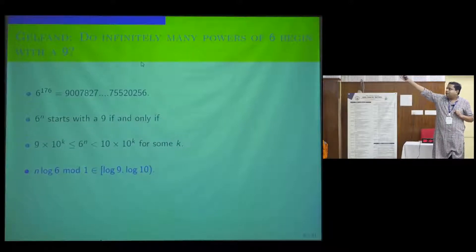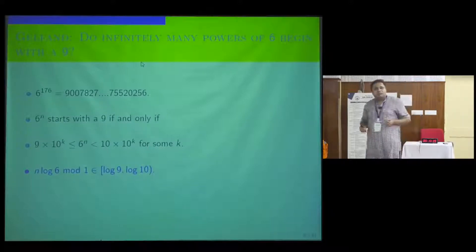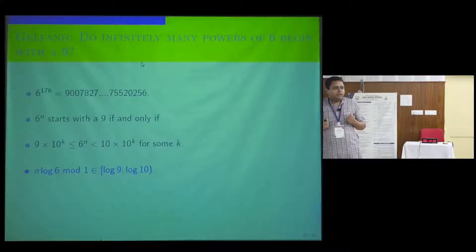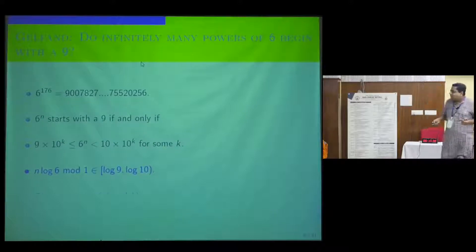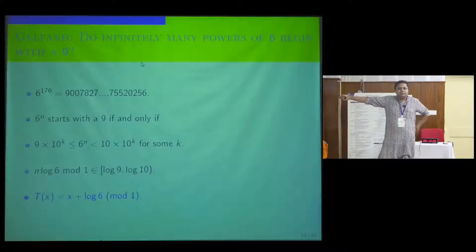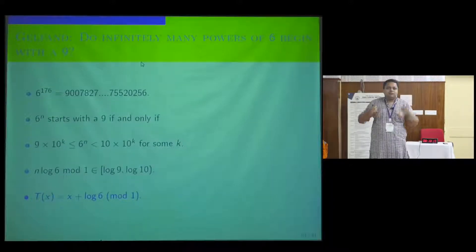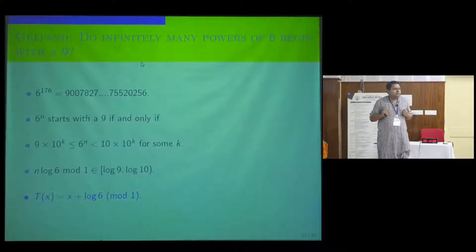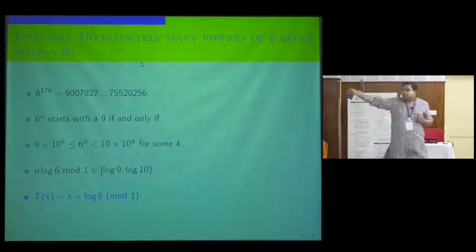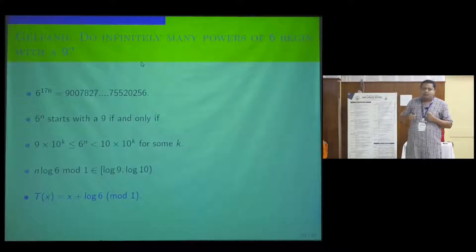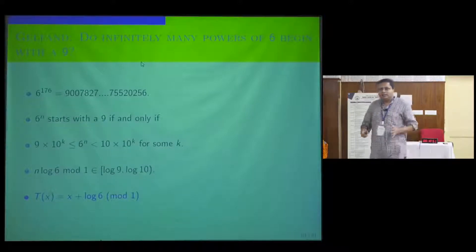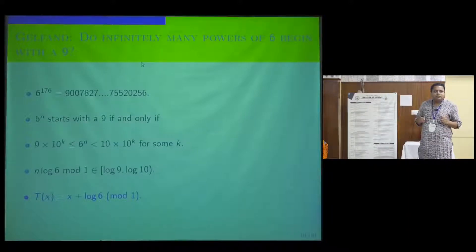A power of 6 begins with a 9 if and only if there exists an integer n such that n·log 6, taken mod 1, belongs to some small sub-interval of [0,1]. To analyze if this happens infinitely often, we set up a dynamical system. We take the unit circle — the interval [0,1] with 0 and 1 identified — and on this circle we consider rotation by the number log 6. The answer to Gelfand's question depends on whether, while moving infinitely often, we hit the small interval [log 9, log 10].